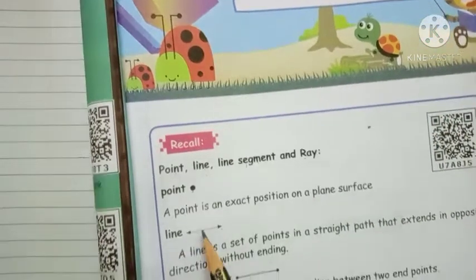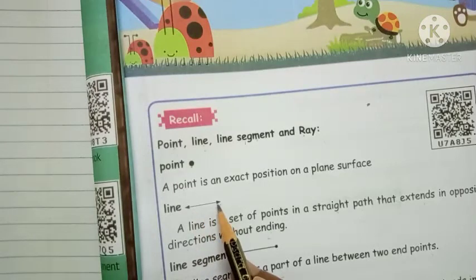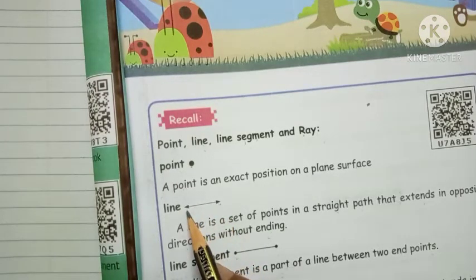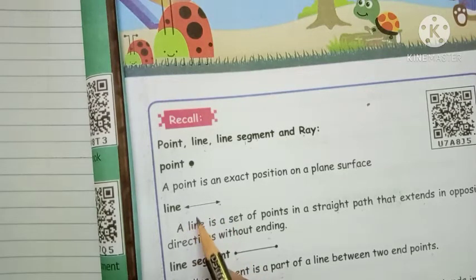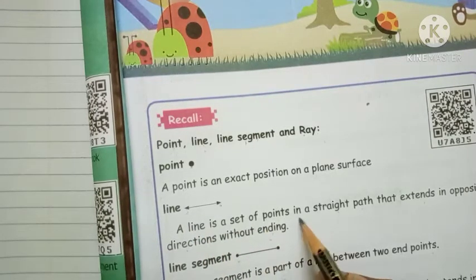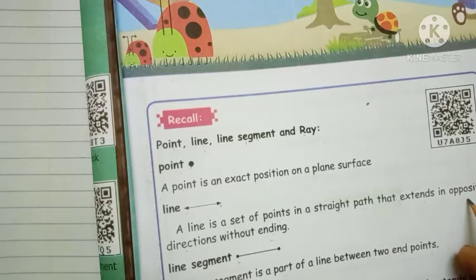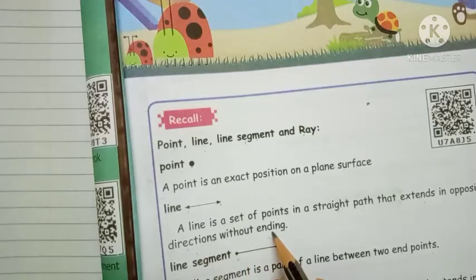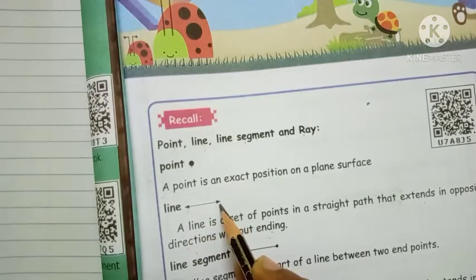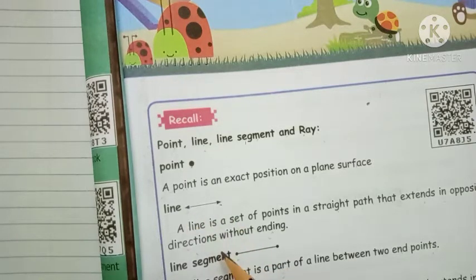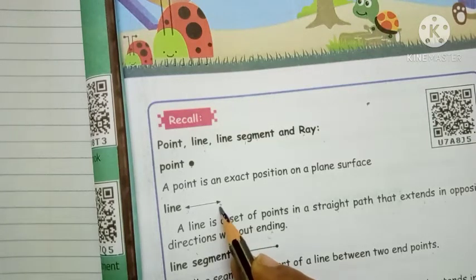The next one: line. A line has arrow symbols on both ends — two arrow symbols. A line is a set of points in a straight path that extends in opposite directions without ending. Both directions are not ending. This is called a line.